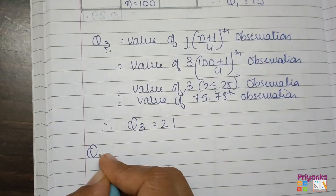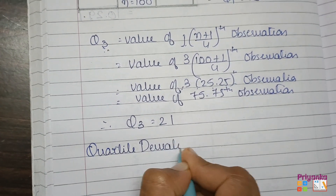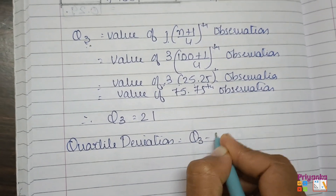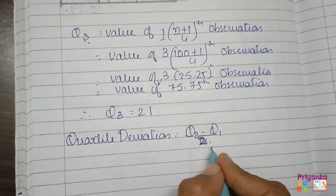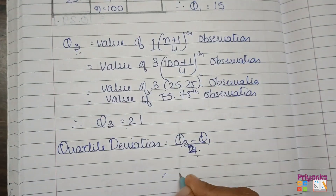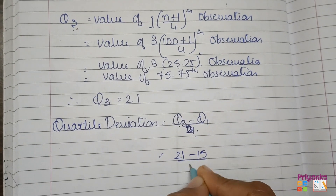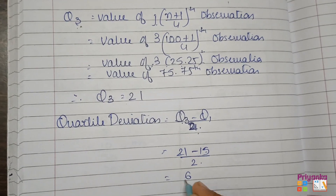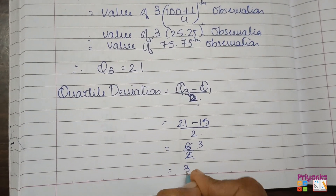Now we find quartile deviation, which is Q3 minus Q1 divided by 2. Q3 is 21 and Q1 is 15. So it becomes 21 minus 15 equals 6, divided by 2, giving us 3. The answer for quartile deviation is 3.